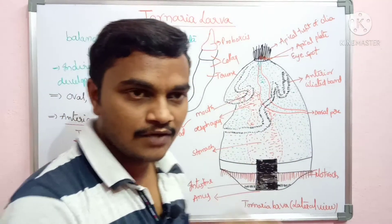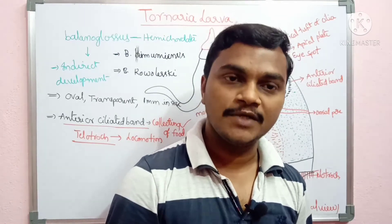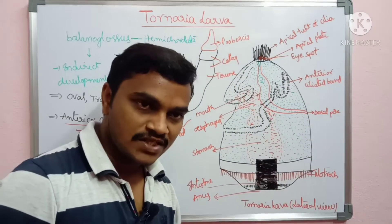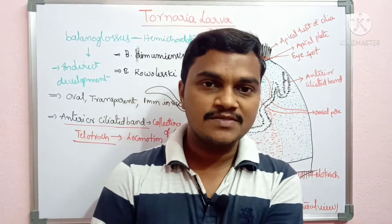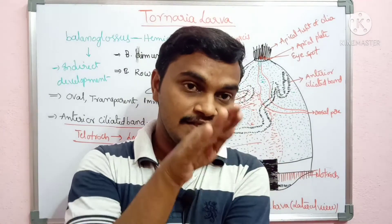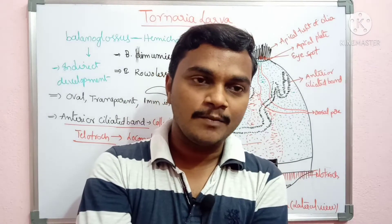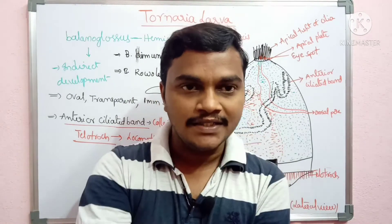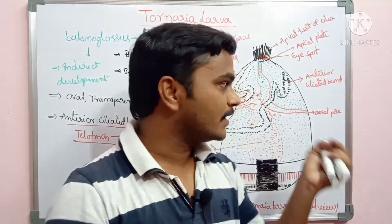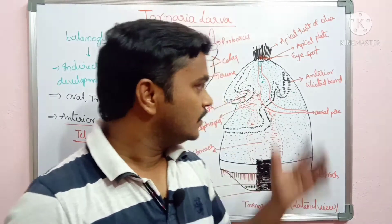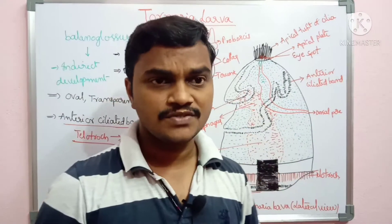For attachment of the larval stage, an adhering tail — a posterior tail — appears at the time of metamorphosis. This tail is a temporary structure used to fix onto a surface. Once metamorphosis is complete, it is reabsorbed back into the body.